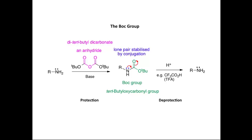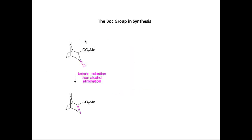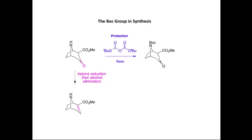Let's now look at the use of the Boc group in synthesis. We're going to consider the transformation of a compound to convert a ketone into an alkene. This can be achieved in two steps: first we reduce the ketone to form an alcohol, and in the second step we eliminate the alcohol to form the carbon-carbon double bond. In order for the alcohol elimination to proceed successfully, we need to protect the nitrogen atom in the starting material. So the first thing we do is protect the nitrogen as a Boc group by reacting the amine with Boc anhydride in the presence of base, converting the secondary amine into the Boc carbamate.